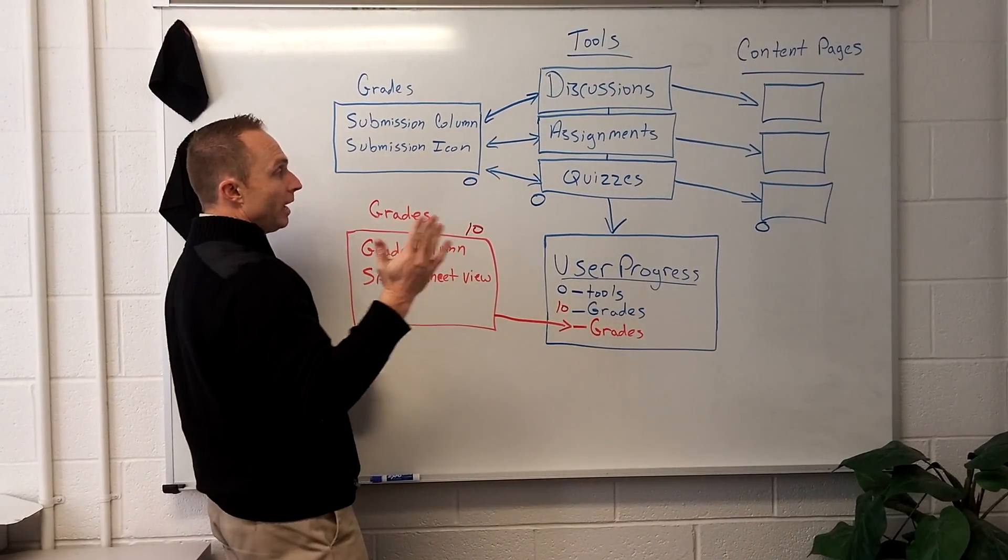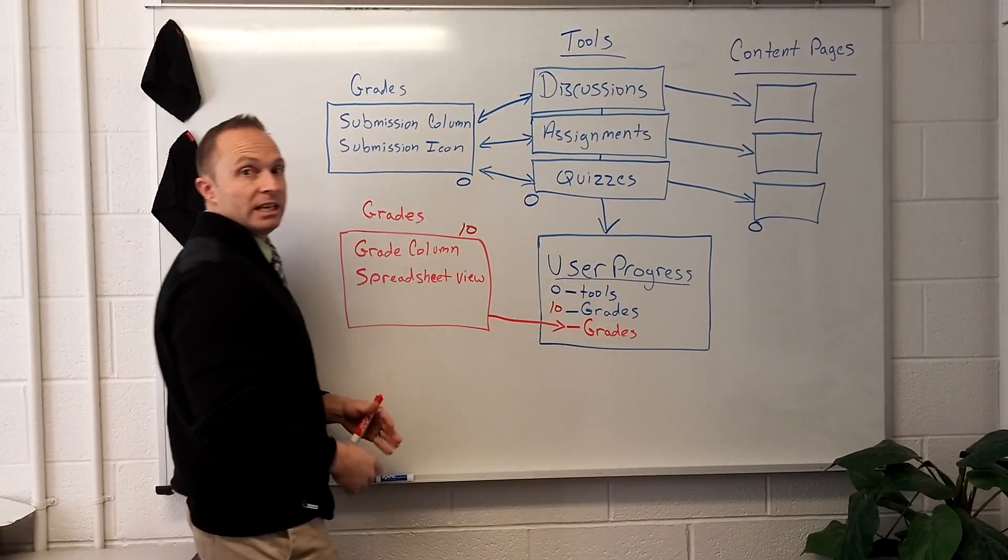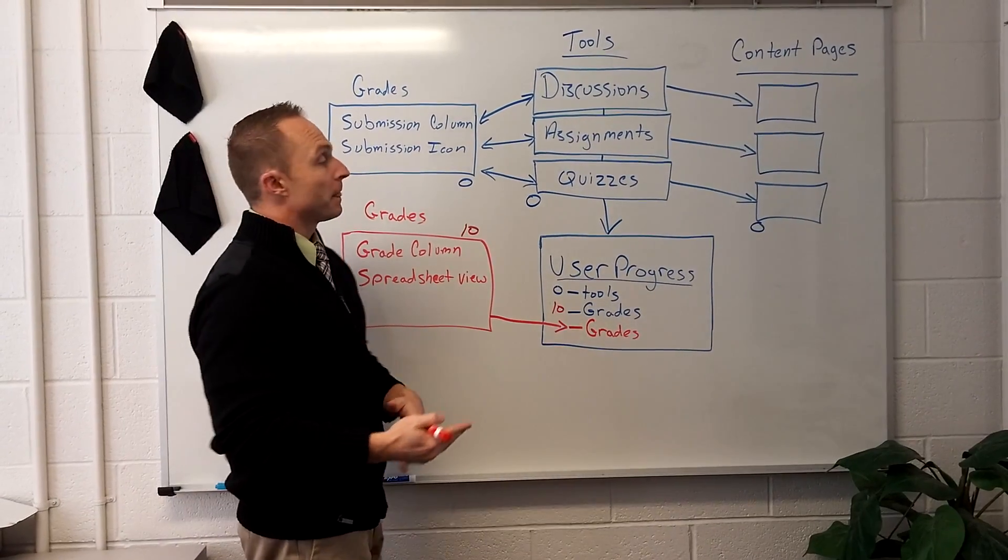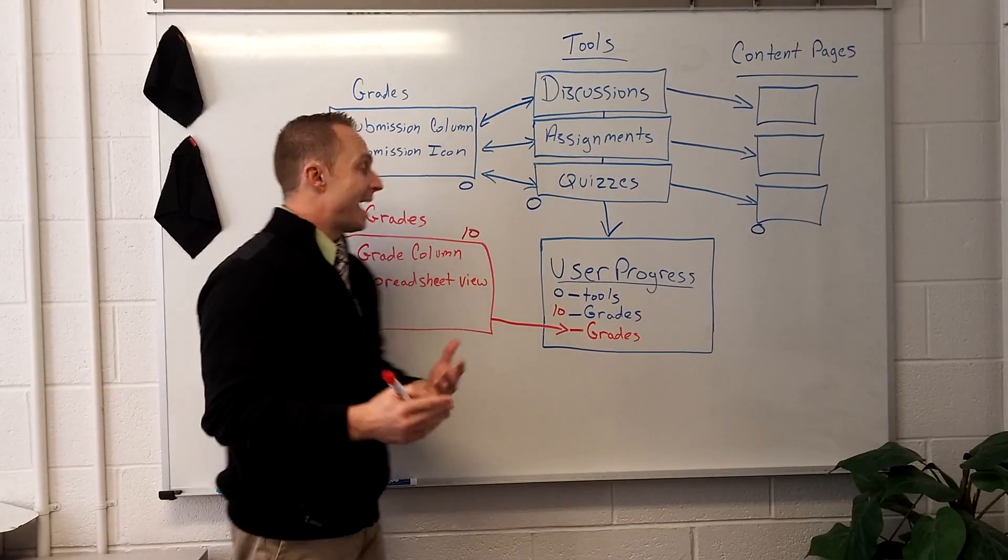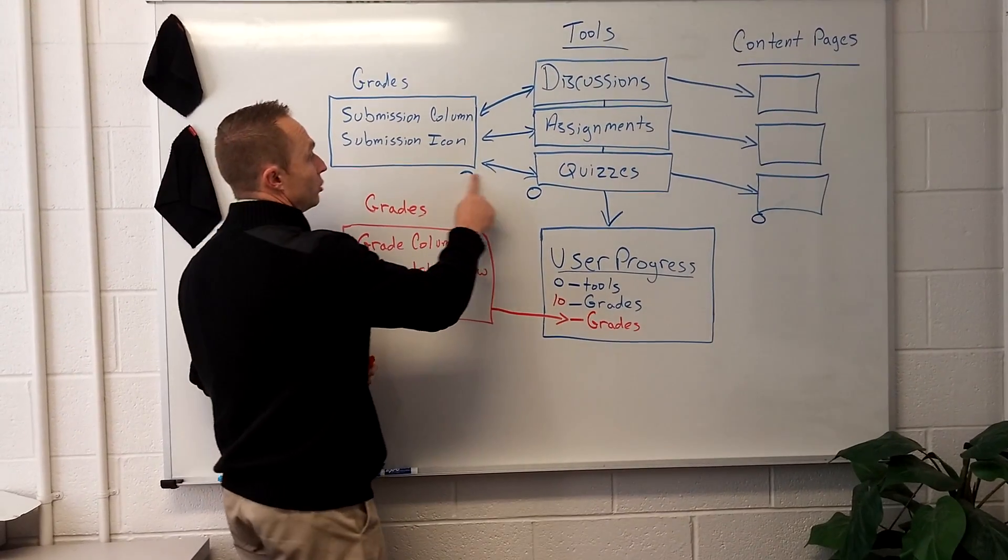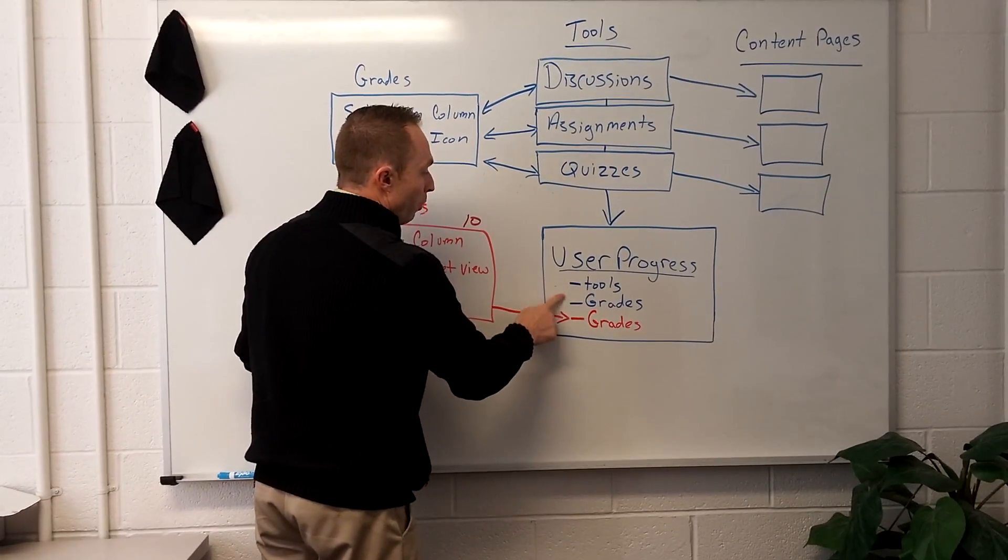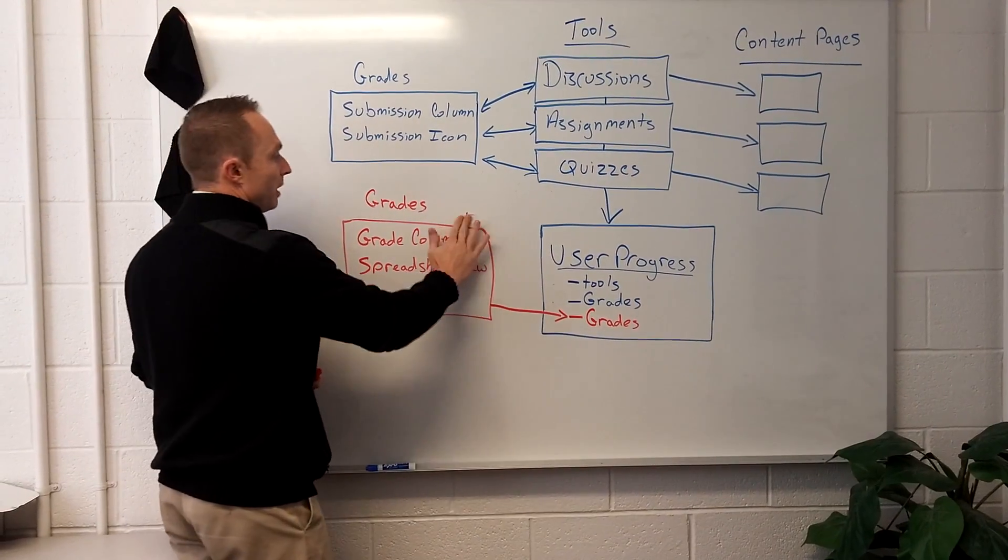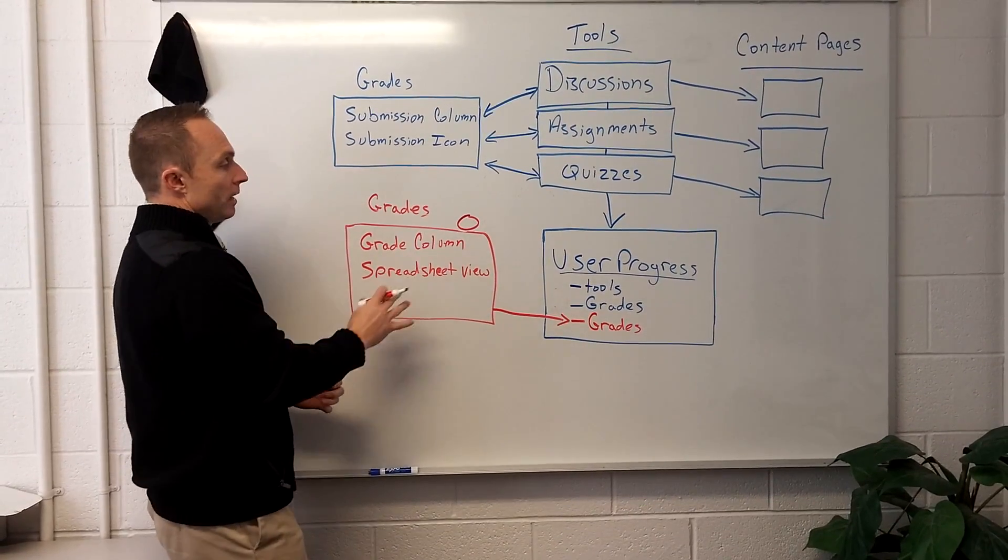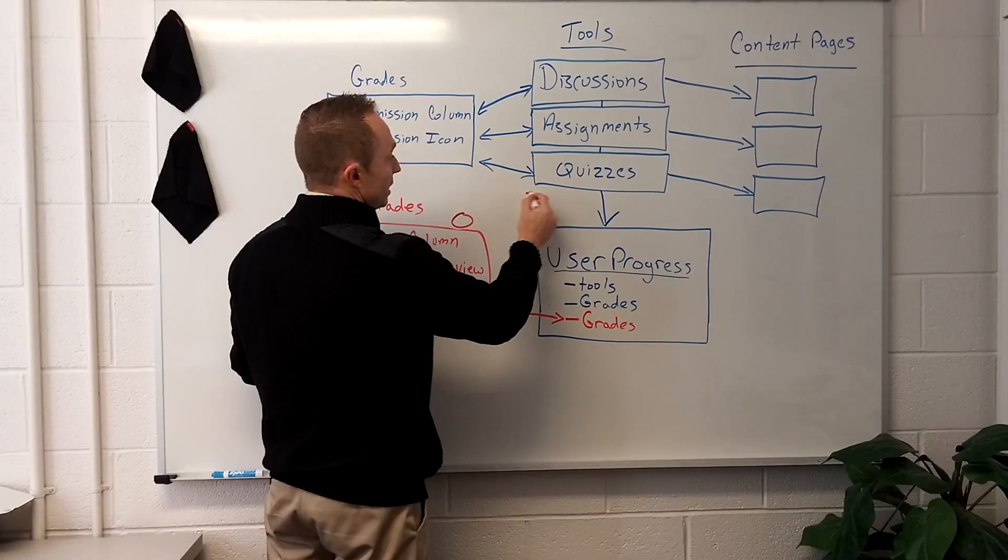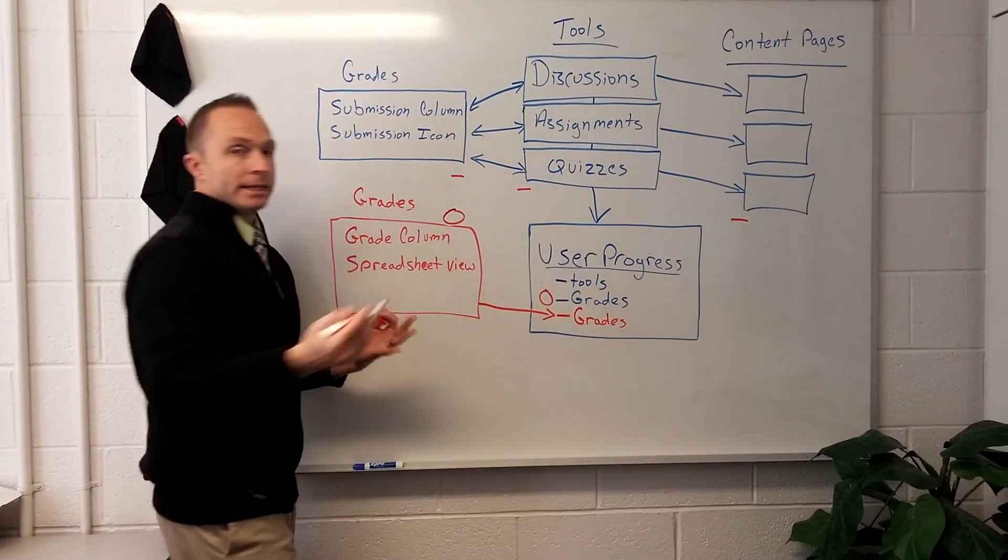So the student could potentially, this is the big problem, see a zero and a ten. They could see a miscommunication of what their grade is. They could see they have one grade in one place and another grade in another place. And that was what we were trying to avoid in training. We didn't want instructors to run against that problem. So what we recommended is that this place right here in red was only used for giving zeros. If you use a zero here and the student sees no grade in these other places, well, a no grade and a zero is not so confusing.